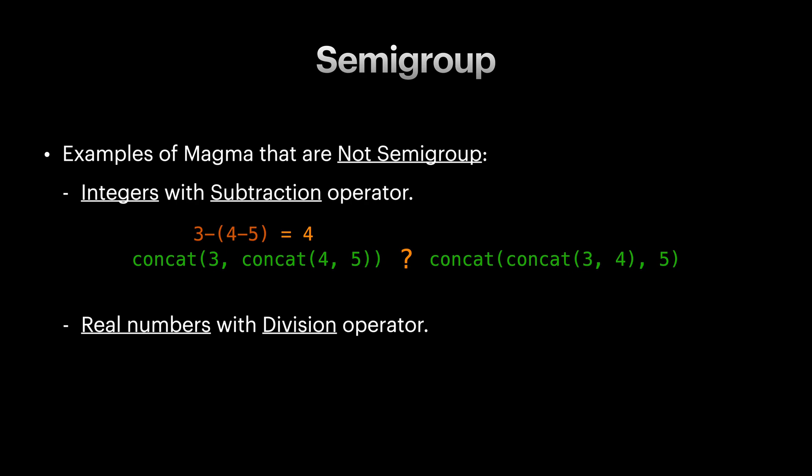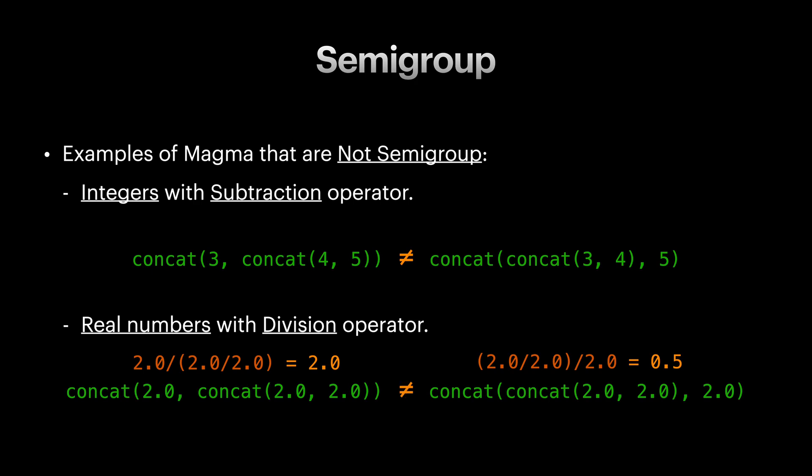Consider subtracting three, four, and five. Are these two expressions equal? Well, if we calculate left we get four, but if we calculate right we get minus six. Obviously these are not equal, and since we could find one example of such inequality, then integer type with subtraction operator is not a semigroup. Let's do the same for real numbers and division operator. Trying dividing values two in two different orders shows that real numbers with division operator is not associative and therefore not a semigroup.